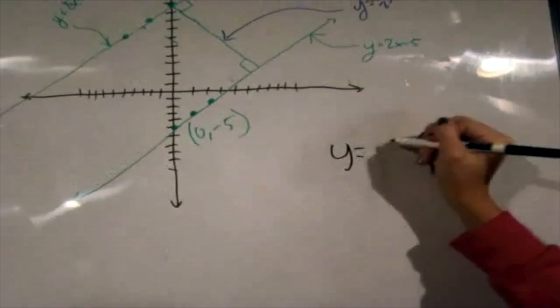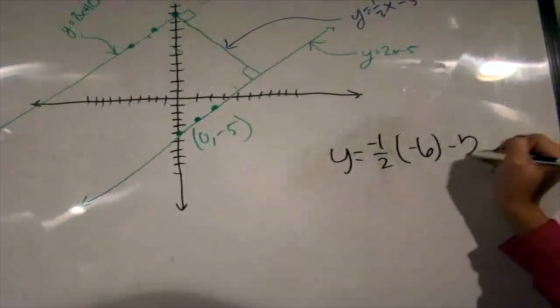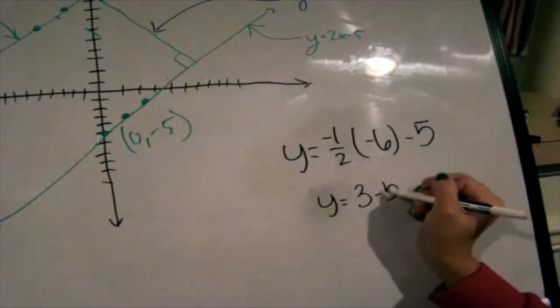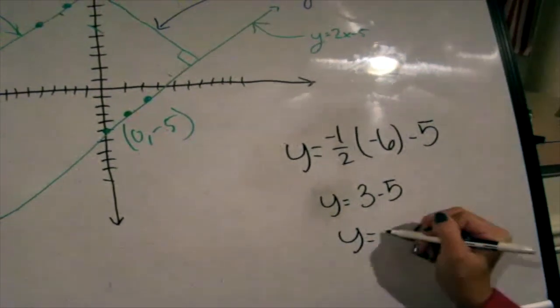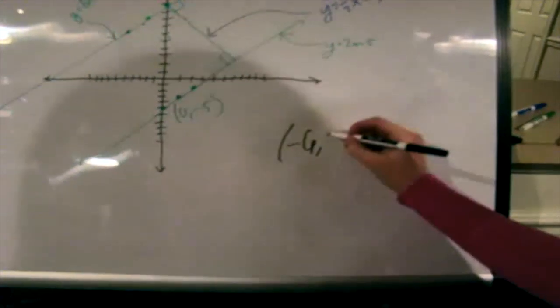Next, plug in x into the equation. The two points are (negative 6, 2) and (0, negative 5).